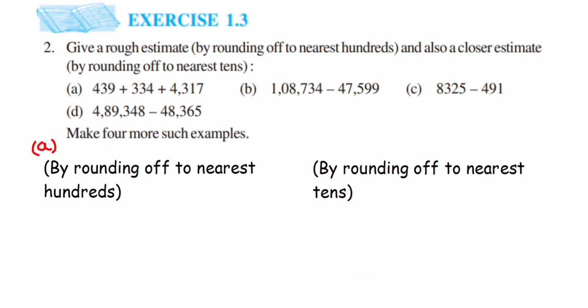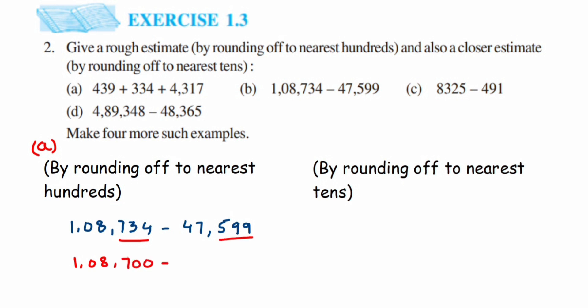The second question is 1,08,734 minus 47,599. First, rounding to nearest hundreds: for 734, it lies between 700 and 800 and is closer to 700, so we get 1,08,700. For 47,599, checking 599 — it lies between 500 and 600 and is closer to 600, so we get 47,600. Subtracting: 1,08,700 − 47,600 = 61,100.